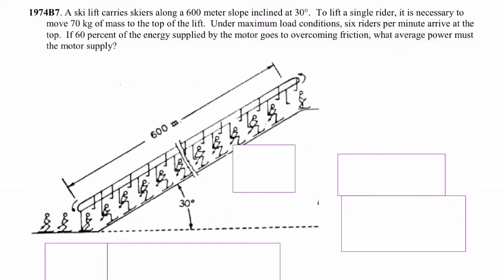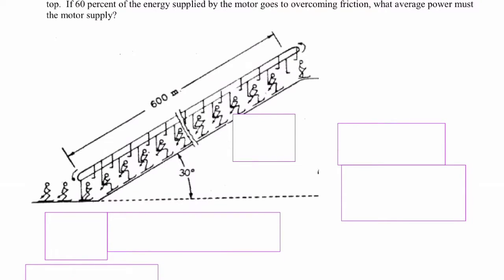In order to calculate power, we're going to use the equation work divided by time. Power is also known as the rate that work is done, so this equation makes sense.